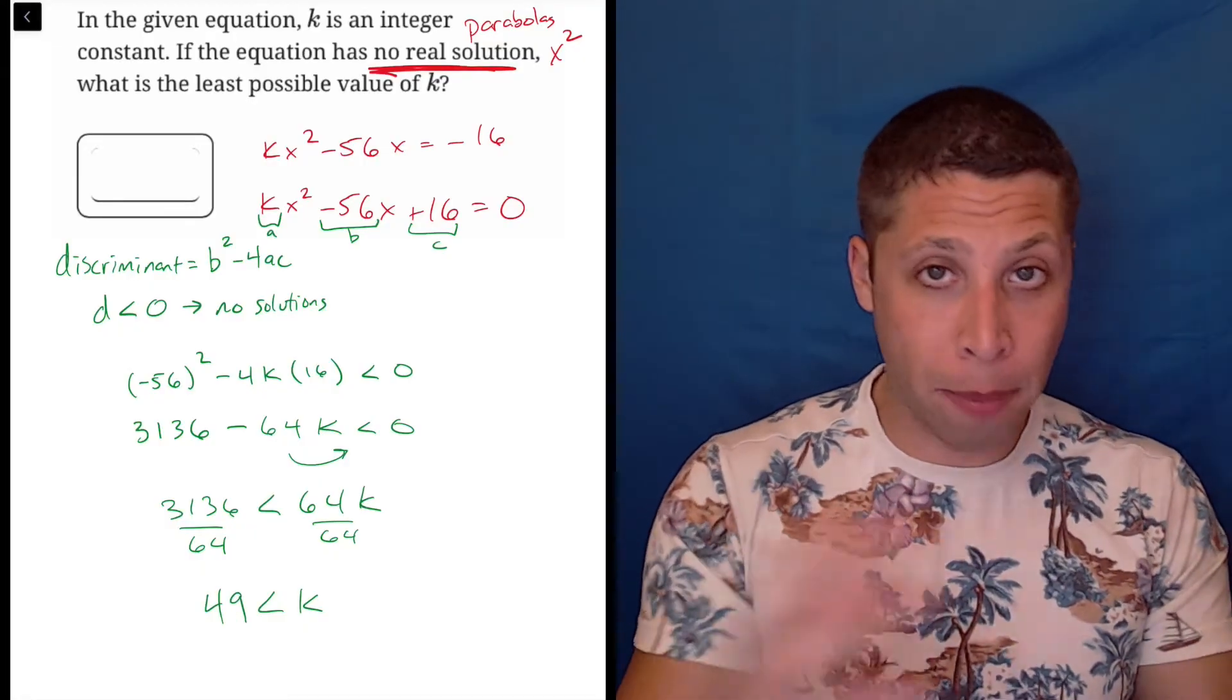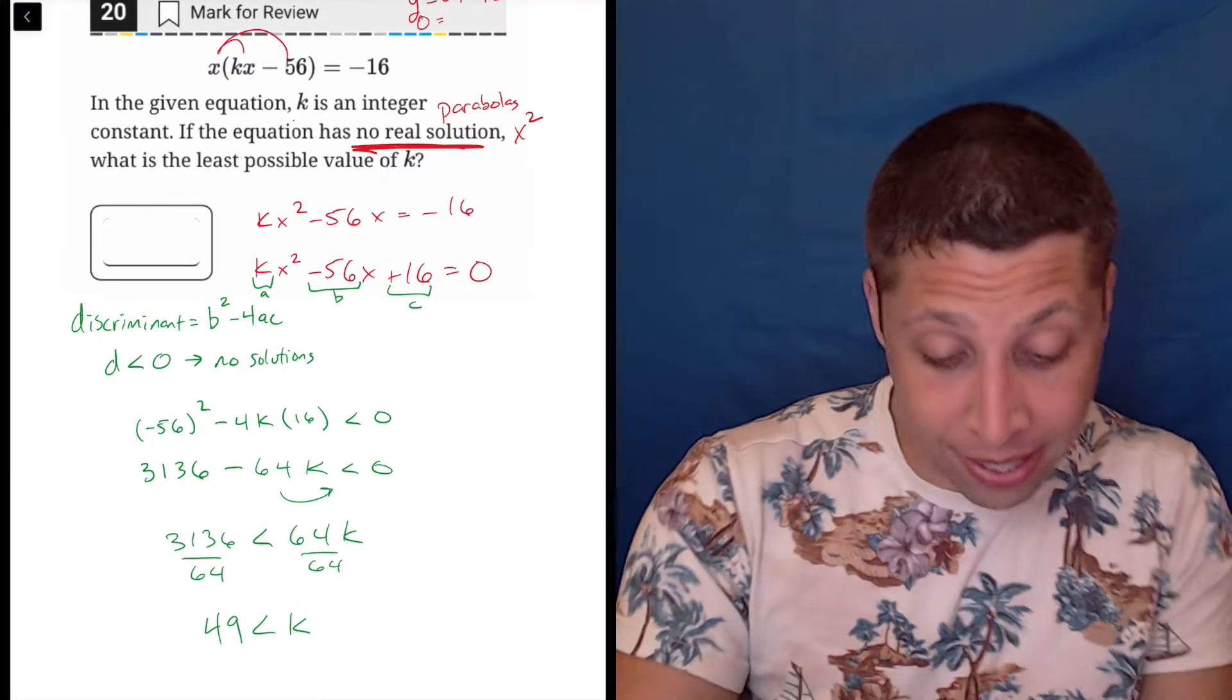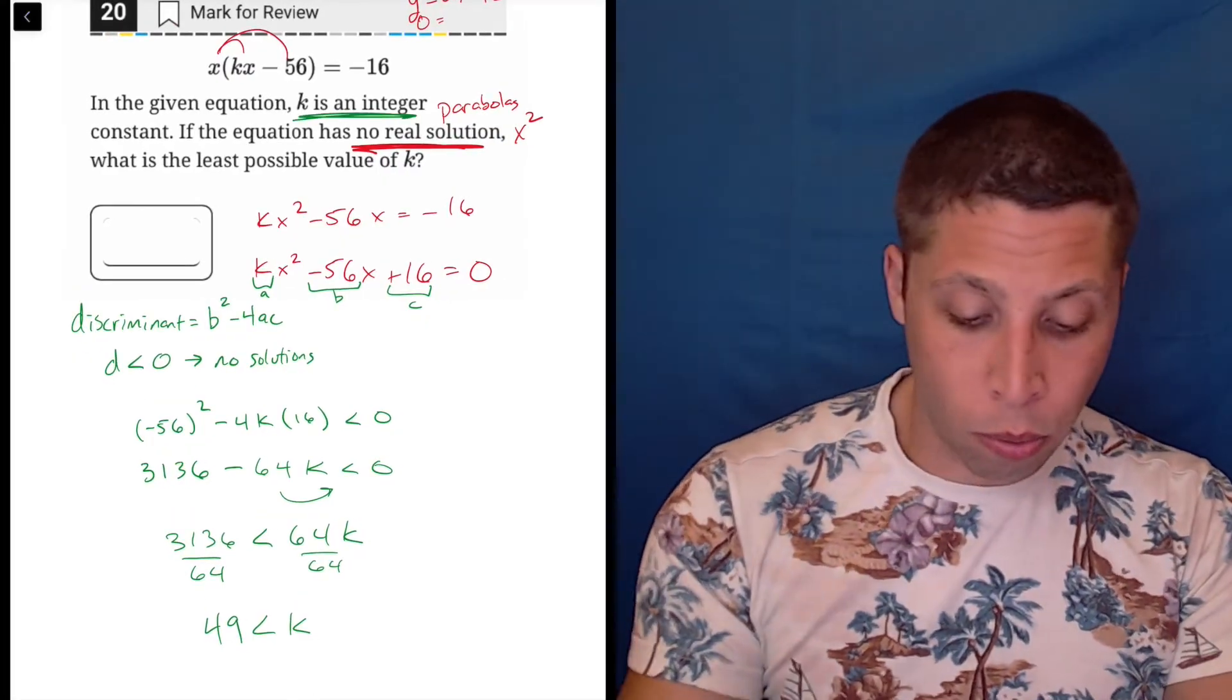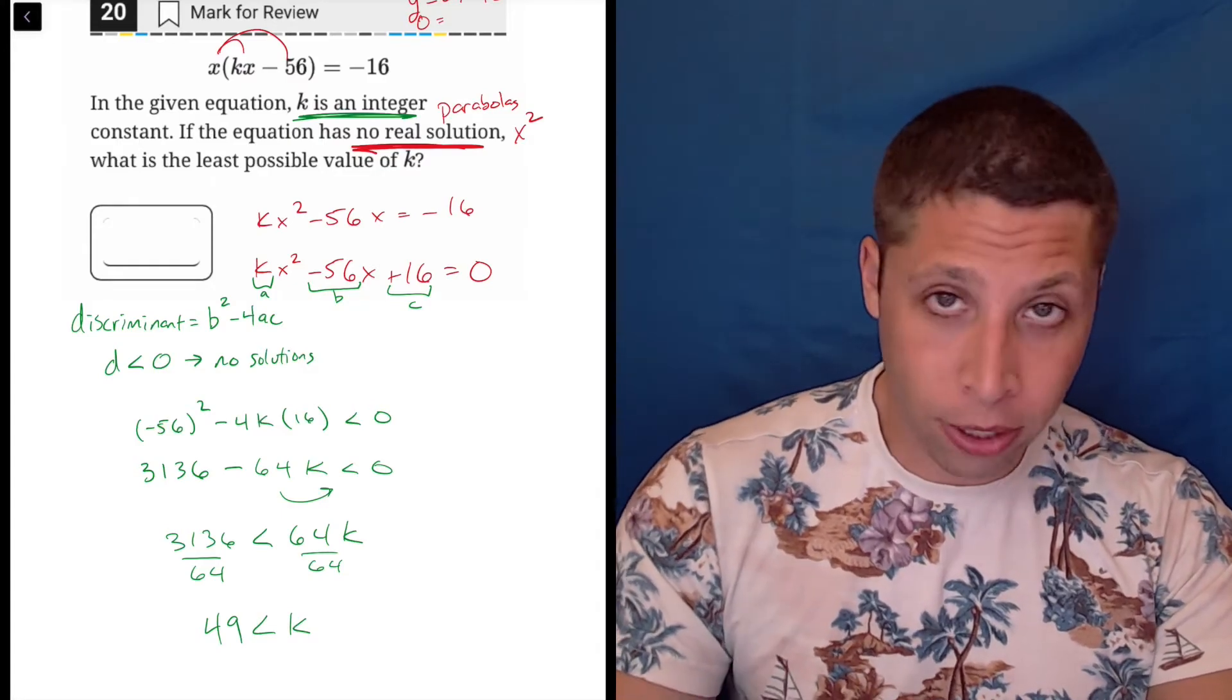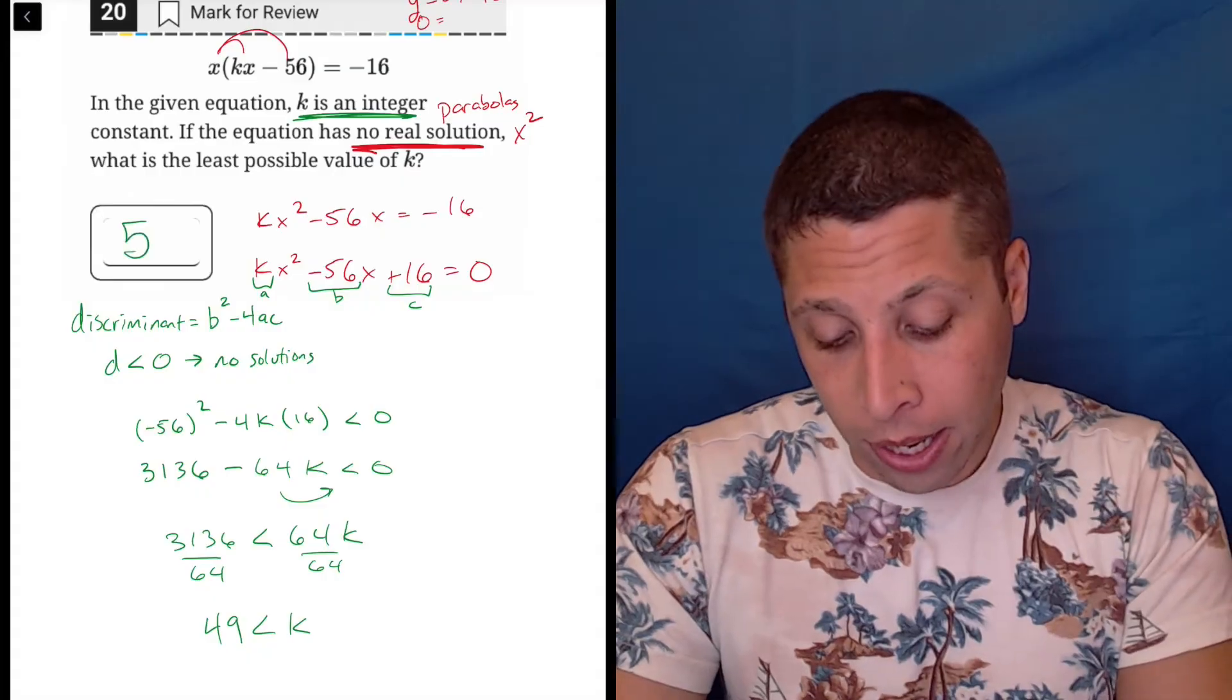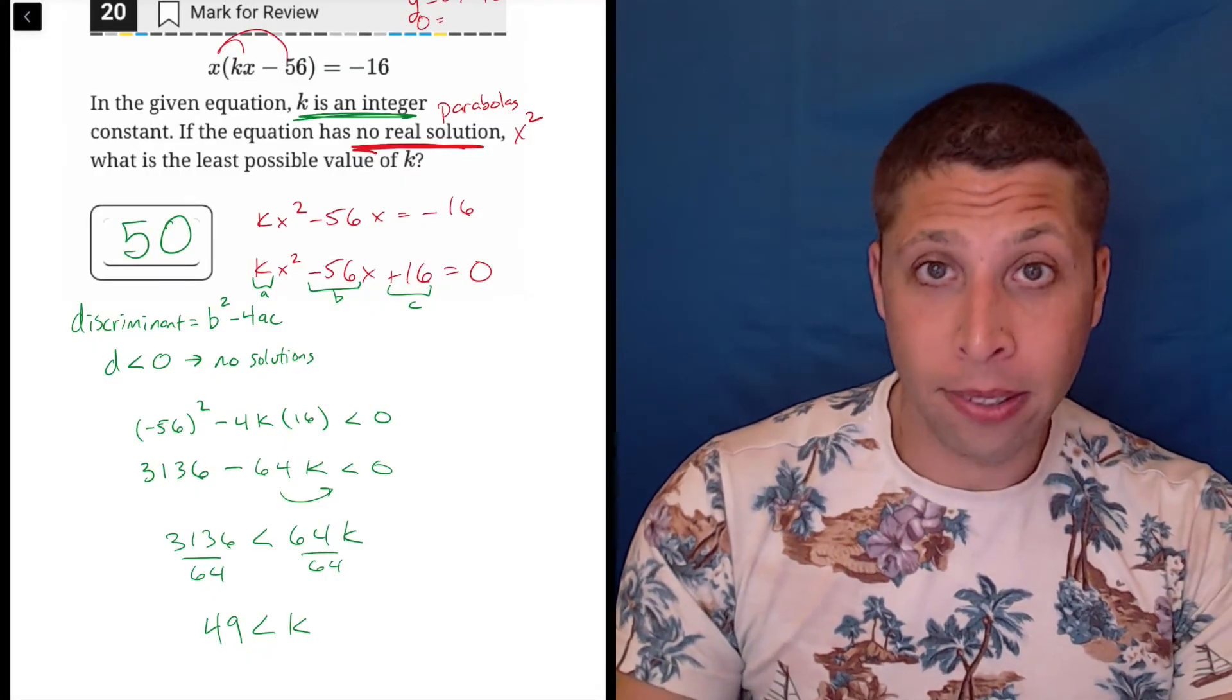So k is greater than 49. k is an integer, so what is the least possible value of k? If k has to be greater than 49, the smallest integer that's greater than 49 is 50. So that is the answer.